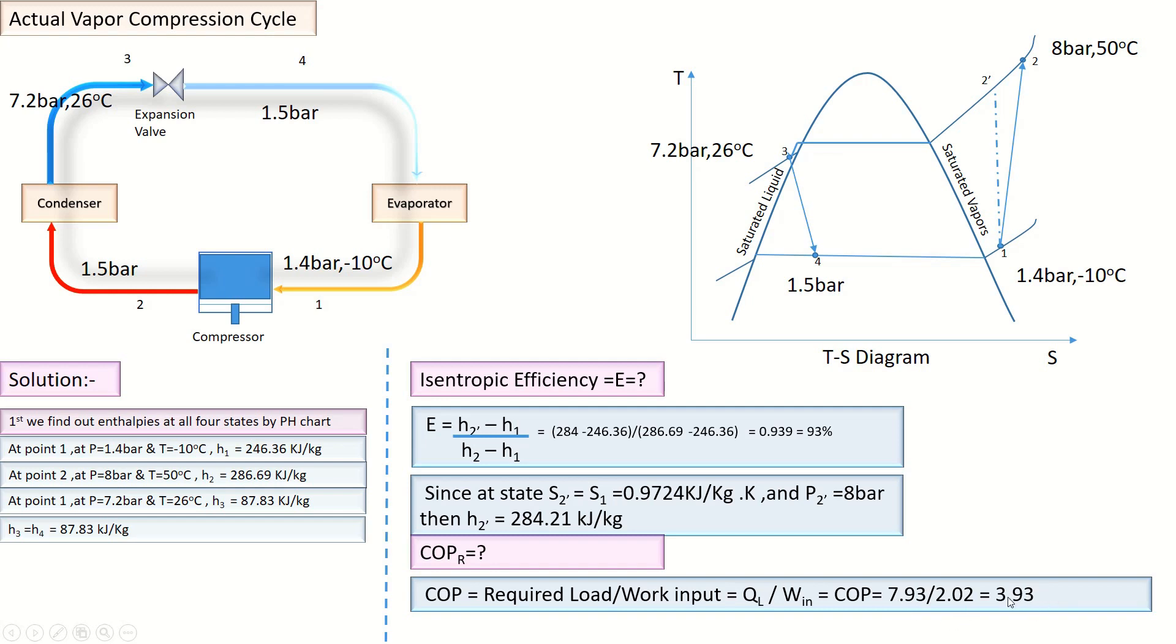This COP value indicates that for every 1 kilowatt power input to the compressor, we will get 3.93 kilowatts of refrigeration cooling.